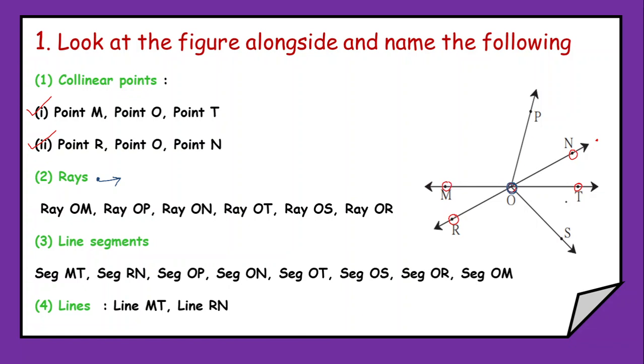Now simply we can say ray OM, OP, ON, OT, OS and OR. So first you have to write the origin and then the remaining alphabet. So these are the rays.